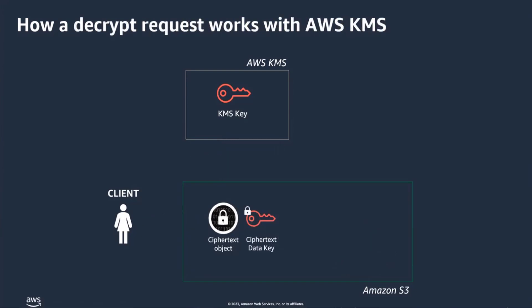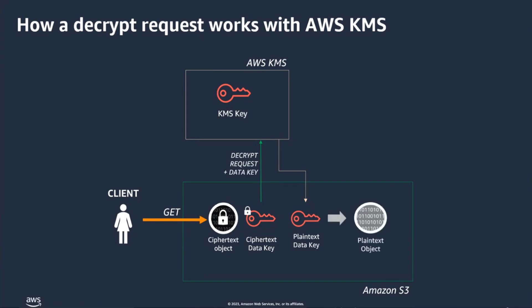Later, when you call a GET on your object, it has to be decrypted, so Amazon S3 and AWS KMS perform the following actions. Amazon S3 sends the encrypted data key to AWS KMS in a decrypt request. Then AWS KMS decrypts the encrypted data key with your KMS key and returns the plain text data key to Amazon S3. Finally, Amazon S3 decrypts the encrypted object using the plain text data key and removes the plain text data key from memory as soon as possible after use.